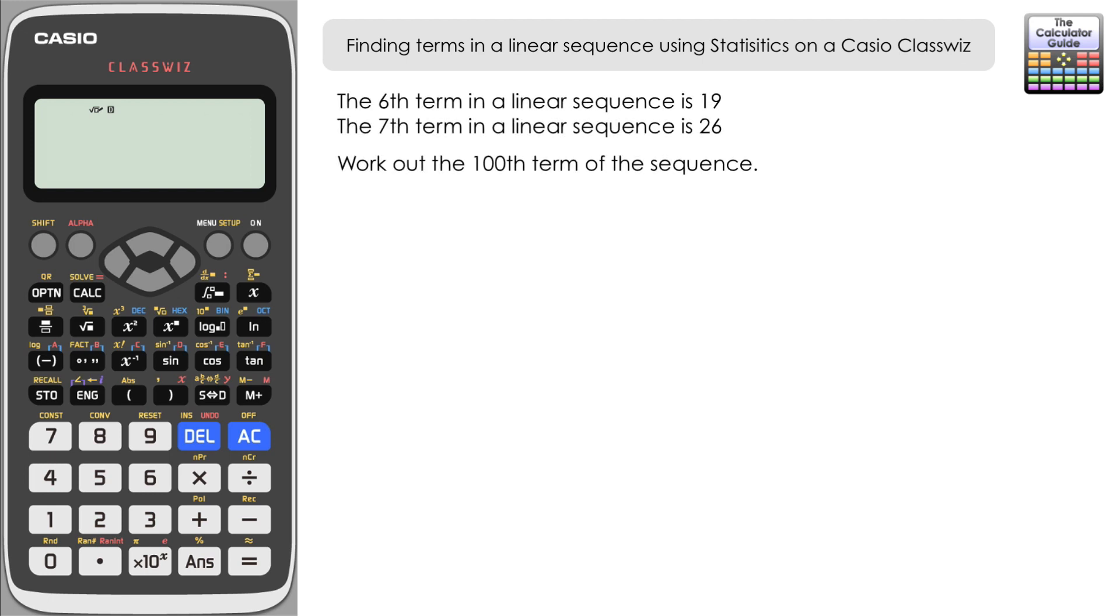In this video we're going to be finding terms in a linear sequence using the statistics mode on a Casio Classwiz. I'm using a Classwiz FX-991EX, but if you have other versions provided that you've got a statistics mode, you're going to be able to follow this video.